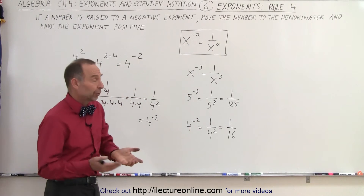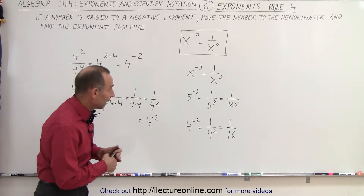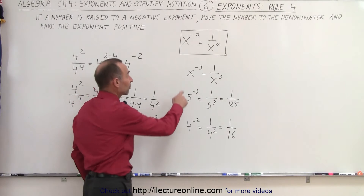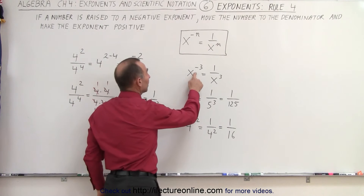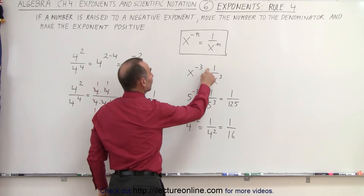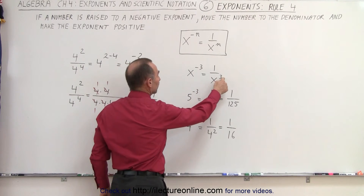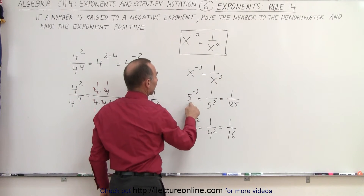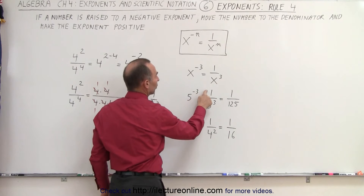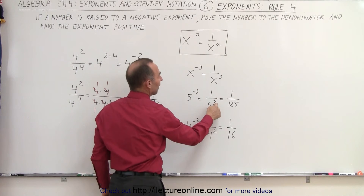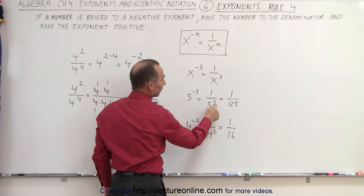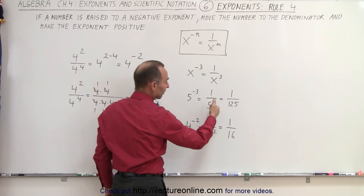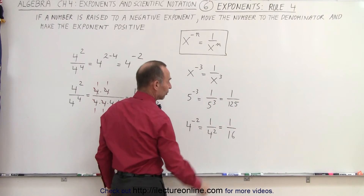A few examples of that: when we have x to the minus 3, that is equal to 1 over x to the positive 3. Also, 5 to the minus 3 is equal to 1 over 5 to the positive 3. And of course, 5 to the third is 5 times 5 times 5, which is 125.